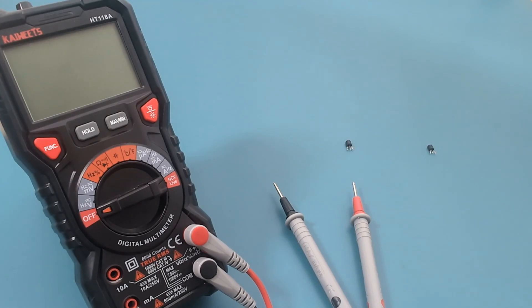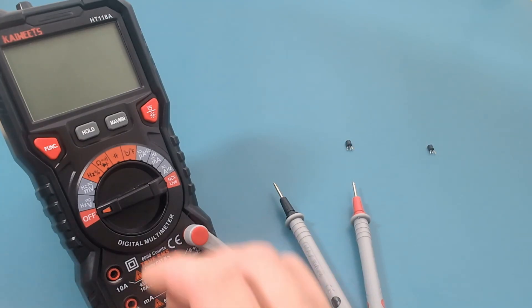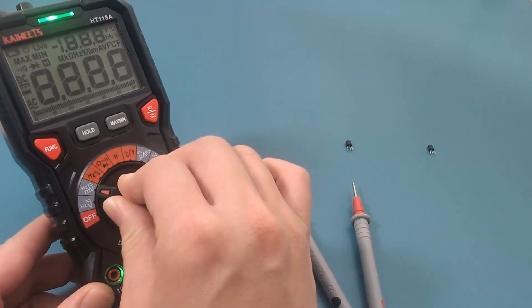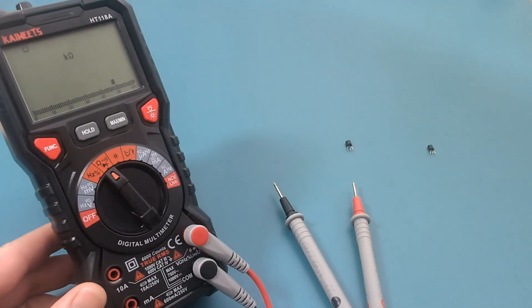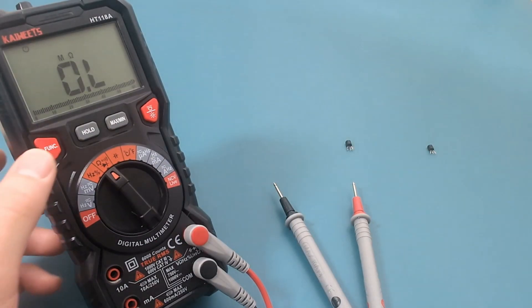To test a transistor with a multimeter, make sure you have the black probe connected to the COM port and the red probe connected to the voltage port. Turn the dial to the continuity and diode setting. Press the function button to toggle to the diode mode.